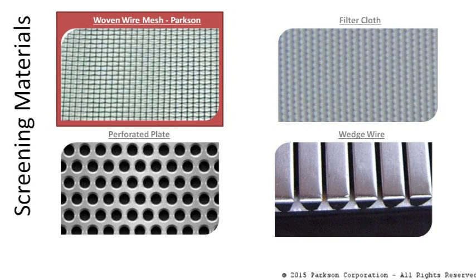So if a thickener is purchased strictly based on capital, the wedge wire or perf sheet drum will likely win. However, the lifecycle cost will be significantly higher for the end user.